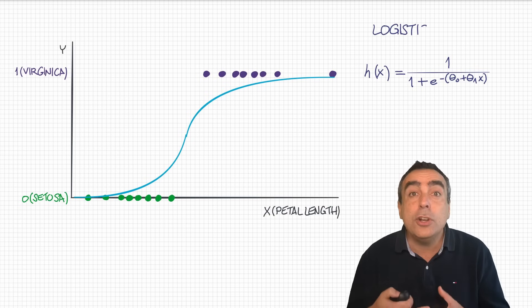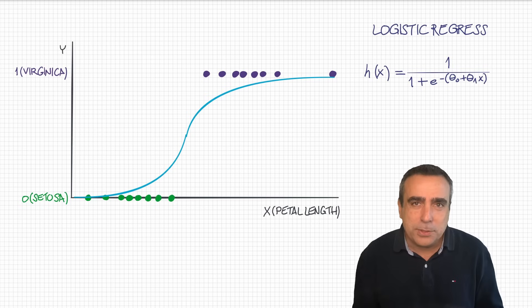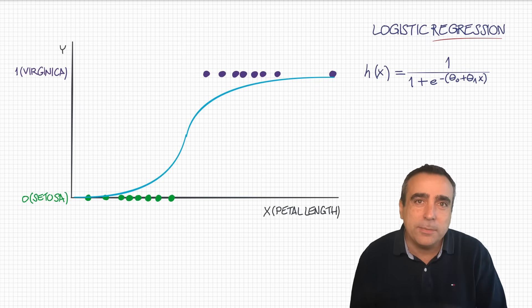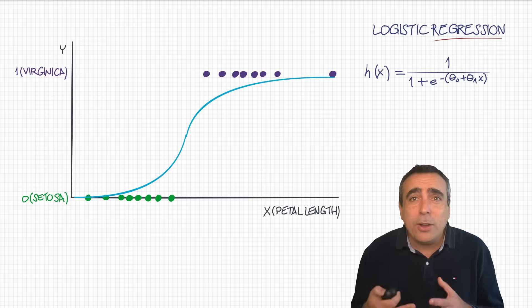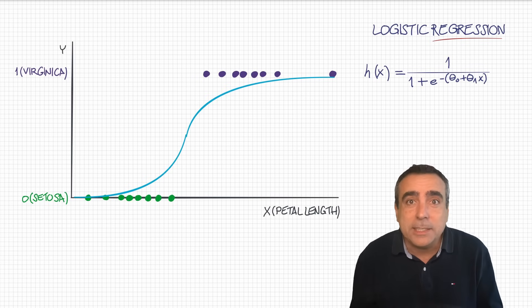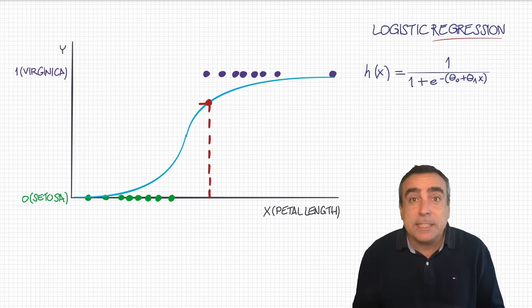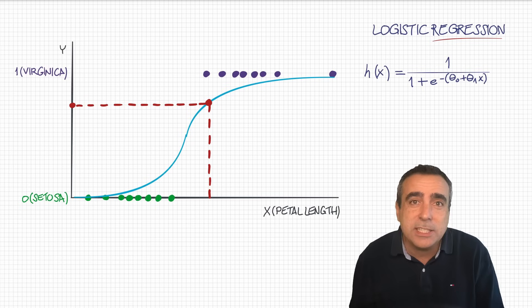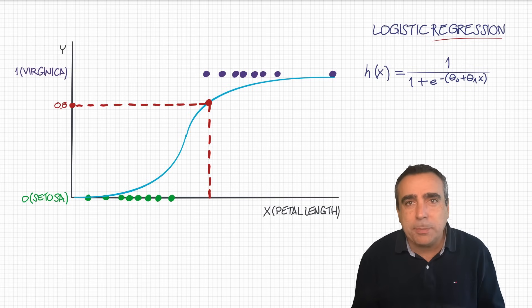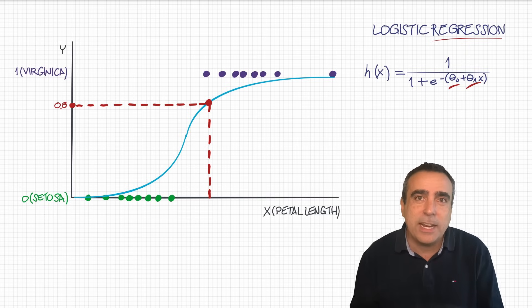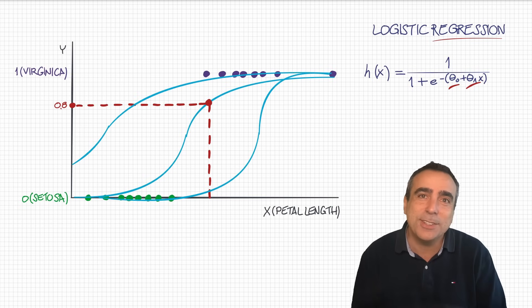So, this approach is called logistic regression. And I know that the name is super confusing, because it has regression on it, even if I'm doing a classification. It's called regression because the output is still a number between 0 and 1, and not just a category. But you can also interpret that number as a probability. For example, if you get this input, imagine that you get an output of 0.8. You can say that this flower has an 80% chance of being a virginica, which is quite cool. And just like the linear expression, I can control the shape of this curve by changing the parameters theta 0 and theta 1. So, you can get different offsets and different inclinations to get other functions like these other two.